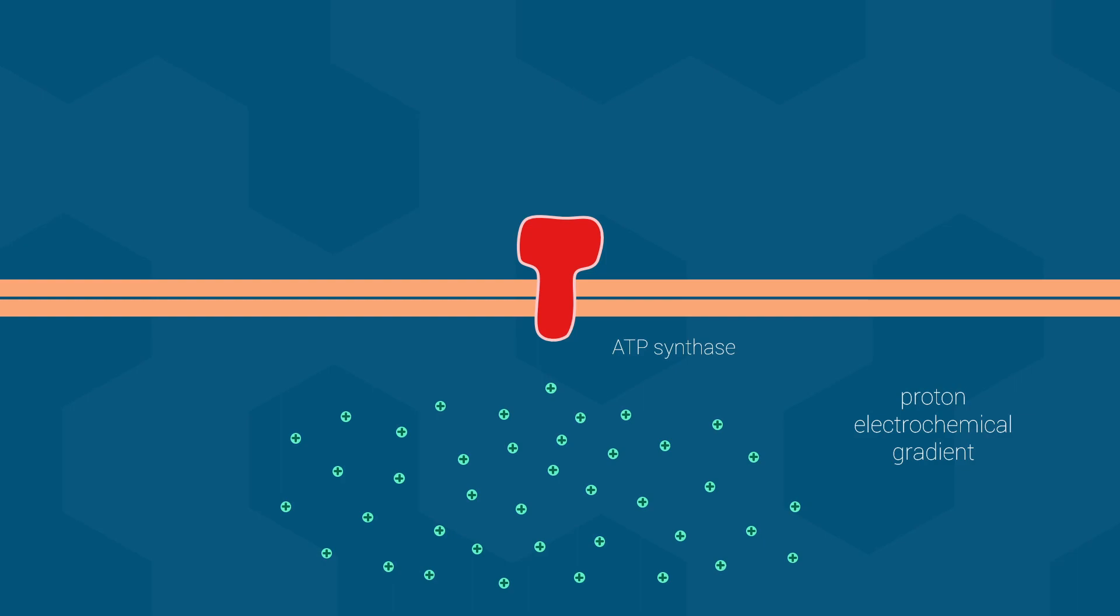ATP synthase provides a path for the proton gradient to travel back across the membrane. Since this happens spontaneously, this proton movement releases energy. ATP synthase then harnesses this energy to combine an ADP and a phosphate into ATP. And this process happens over and over as long as protons are moving through the ATP synthase.